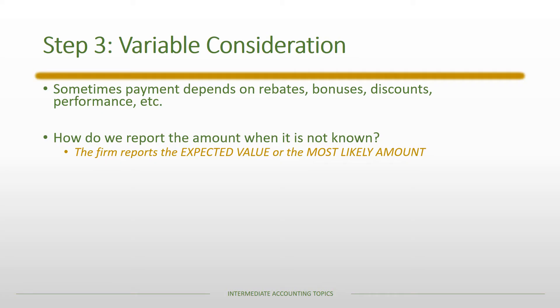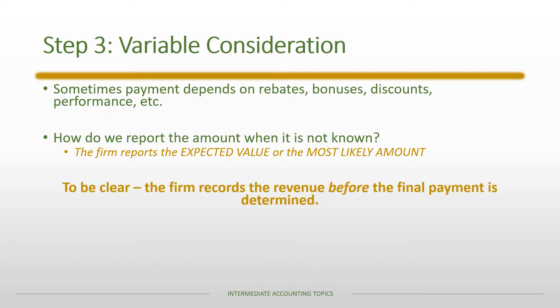You can either report the expected value or the most likely amount. Expected value is like a weighted average — especially when there's a distribution of consideration that might be paid, expected value makes a lot of sense. Alternatively, you could use the most likely amount, which is used when one outcome is more likely than others and may be the best predictor of what will ultimately be paid. The idea is that we're recording revenue now even though final payment is not known and will come later.